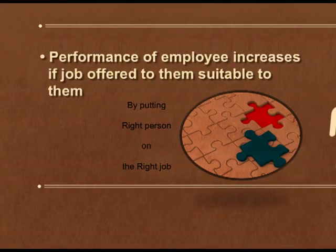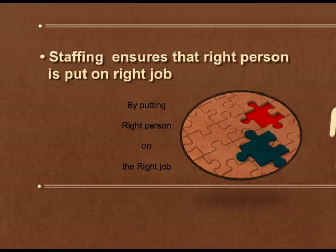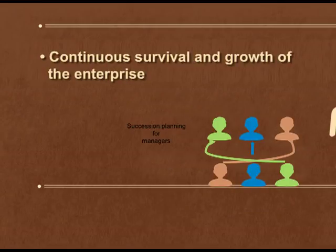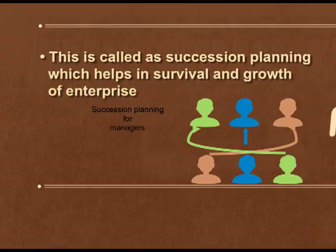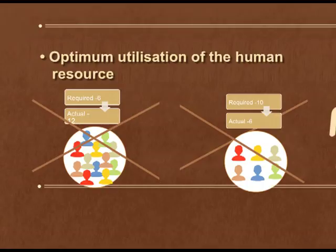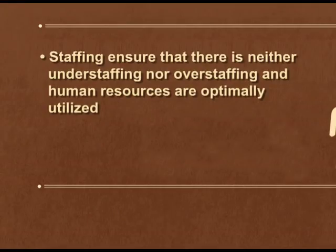Third, continuous survival and growth of an enterprise: staffing helps in identifying and developing internal people with the potential to fill key business leadership positions in the future — this is called succession planning, which helps in survival and growth. Fourth, optimum utilization of human resources: in both overstaffing and understaffing, human resources are not utilized properly. Staffing ensures the organization is neither understaffed nor overstaffed but optimally staffed, so all resources including human resource are optimally utilized.